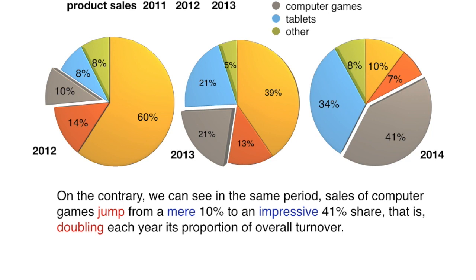Now we are comparing, so here's another statement. On the contrary, we can see in the same period, sales of computer games jump from a mere 10% to an impressive 41% share — that is, doubling each year its proportion of overall turnover. The first is an obvious linking phrase when comparing: 'on the contrary.' Then we have two verbs: to jump and to double. The second is in the gerund form — 'doubling each year,' meaning a 100% increase.